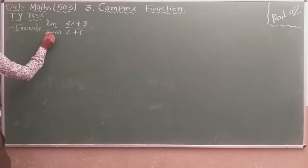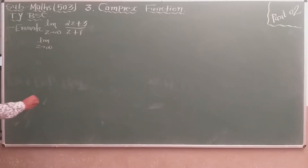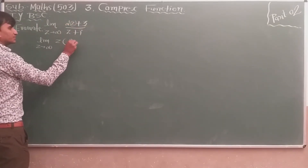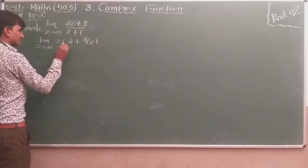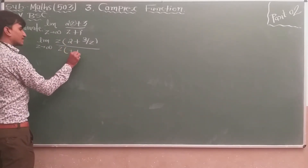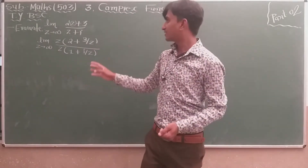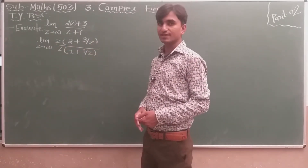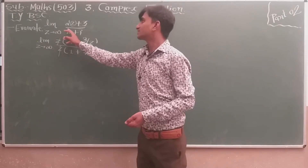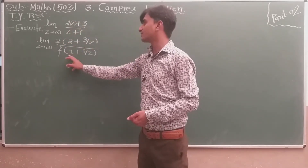So we replace this by taking z common from both denominator and numerator. Taking z common, we get (2 + 3/z) in the numerator and (1 + i/z) in the denominator. Both z's cancel out. We take z common because otherwise we get infinity at both sides.